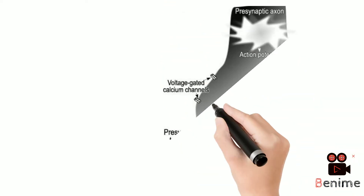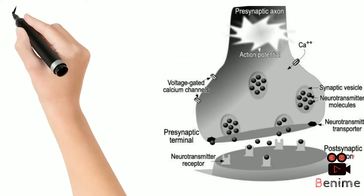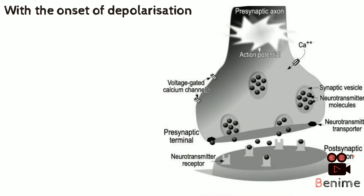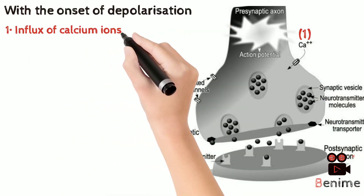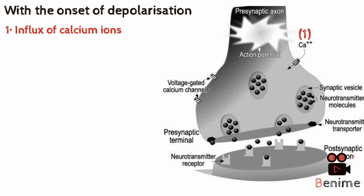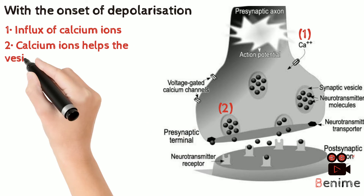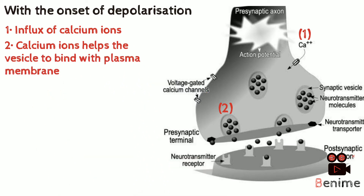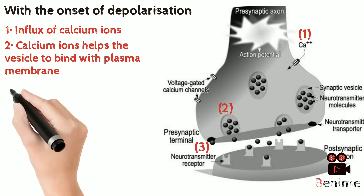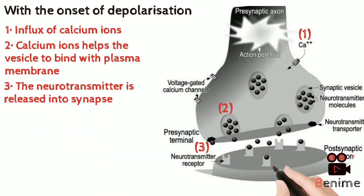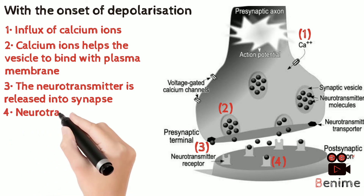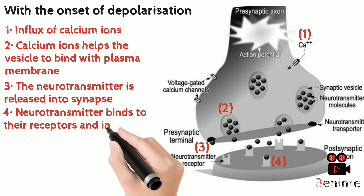Let's see the normal neuromuscular junction physiology. At onset of depolarization, calcium along with sodium enters the cell. This calcium helps in attachment of synaptic vesicles containing neurotransmitters to the presynaptic membrane. The neurotransmitter is then released into the synapse and gets attached to the neuromuscular receptor at the post-synaptic end.